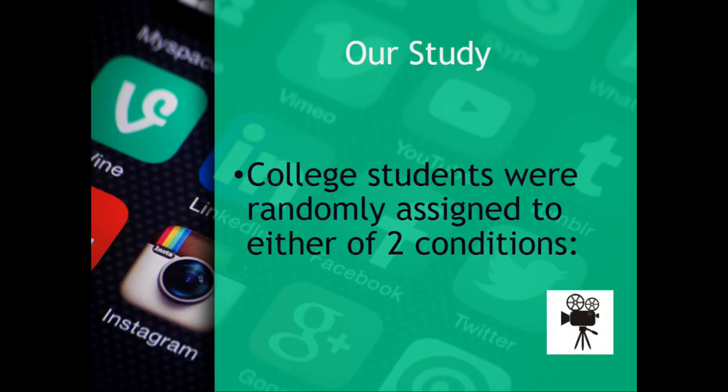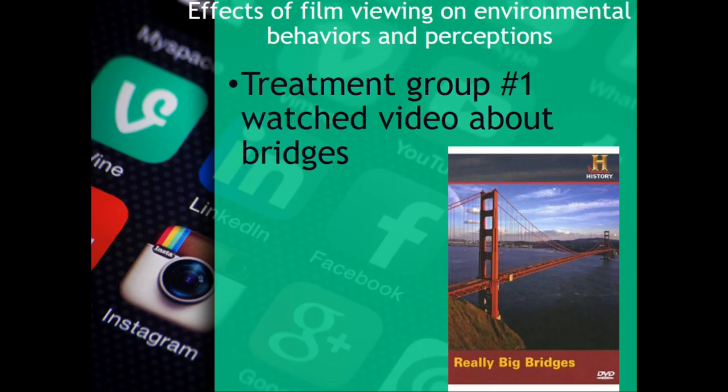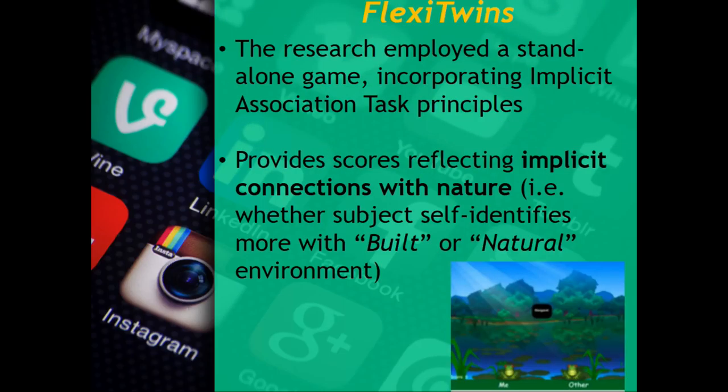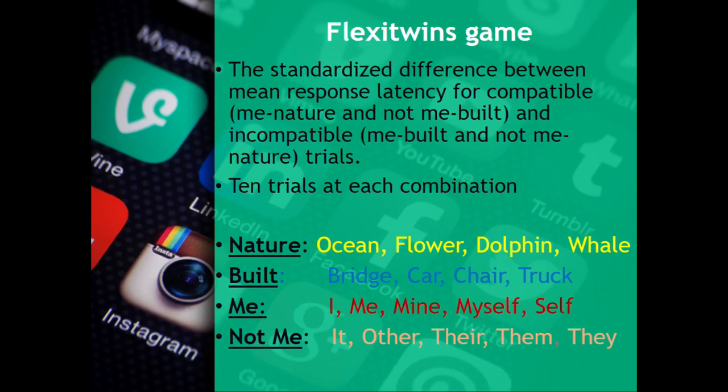In our study, college students were randomly assigned to either of two conditions. Treatment group number one watched a video about bridges. Treatment group number two watched a video about dolphins. The research employed a standalone game incorporating implicit association task principles. It provides scores reflecting implicit connections with nature — for example, whether the subject self-identifies more with the built or the natural environment. The standardized difference between the mean response latency for compatible me-nature and not-me-built, and the incompatible me-built and not-me-nature, were done with 10 trials at each of the combinations.